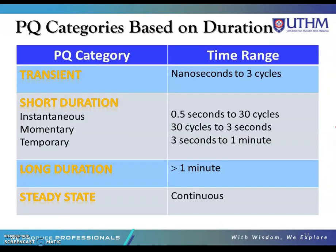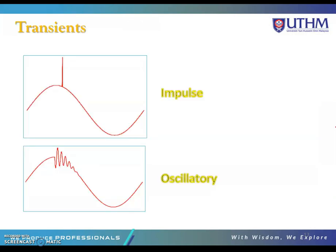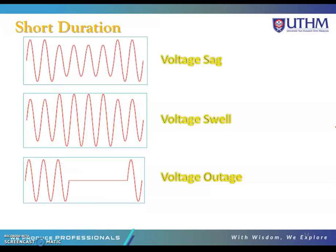Power quality categories are based on duration. Transient events last from nanoseconds to 3 cycles. Short duration events include: instantaneous (0.5 cycles to 30 cycles), momentary (30 cycles to 3 seconds), and temporary (3 seconds to 1 minute). Long duration events last more than 1 minute, and steady-state disturbances are continuous. Transients are momentary variations in current, voltage, or frequency and have impulse and oscillatory waveforms. Short duration events include voltage sag, voltage swell, and voltage outage.